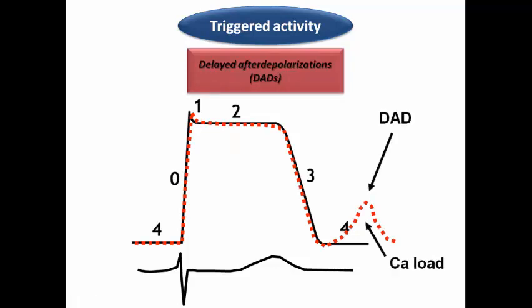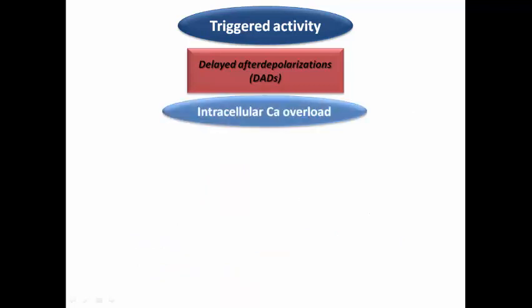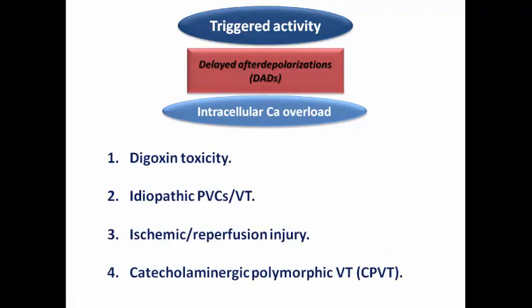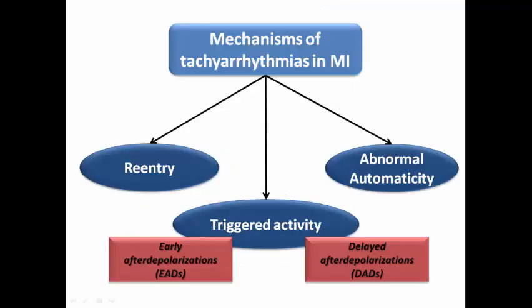Delayed afterdepolarizations (DAD) occur in phase 4 and are related to increased intracellular calcium concentration. DAD can lead to significant tachyarrhythmia; intracellular calcium overload explains arrhythmias in digoxin toxicity, idiopathic VPC and VT, ischemic injury in acute MI, reperfusion injury, and catecholaminergic polymorphic VT (CPVT). A link to the full mechanisms lecture is available for more detail.